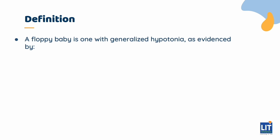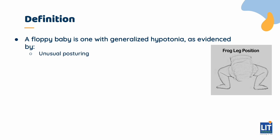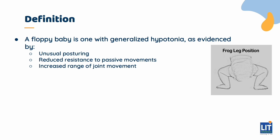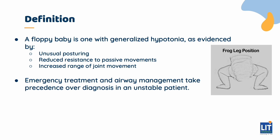The definition of a floppy baby is one with generalized hypotonia, as evidenced by unusual posturing. You may find the child in a frog-like posture with the hips abducted and externally rotated and the knees flexed. There is reduced resistance to passive movements and an increased range of joint movement. In a critically ill child, emergency treatment and airway management takes precedence over making a definitive diagnosis.